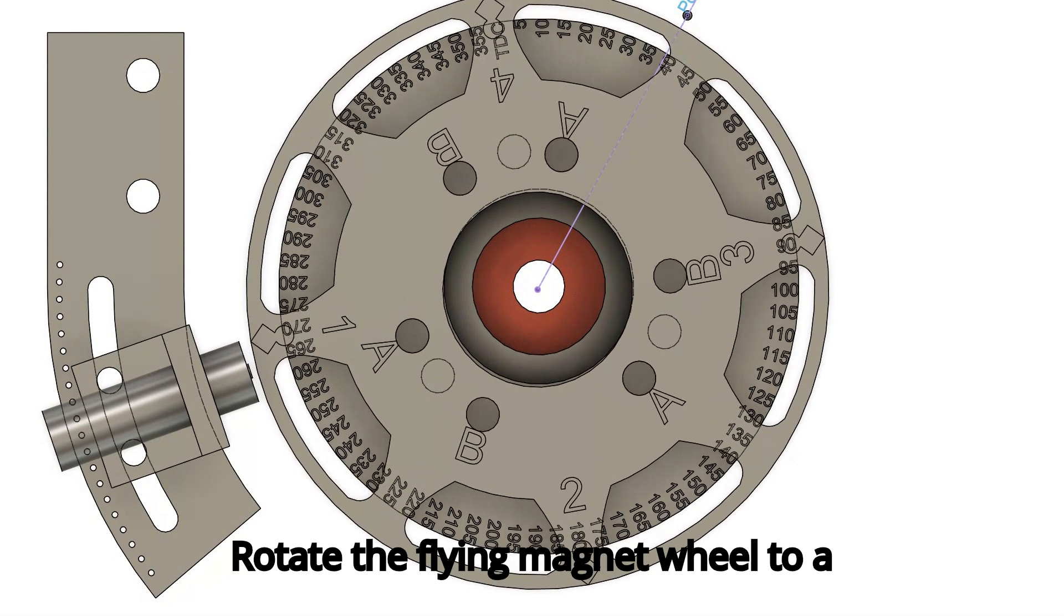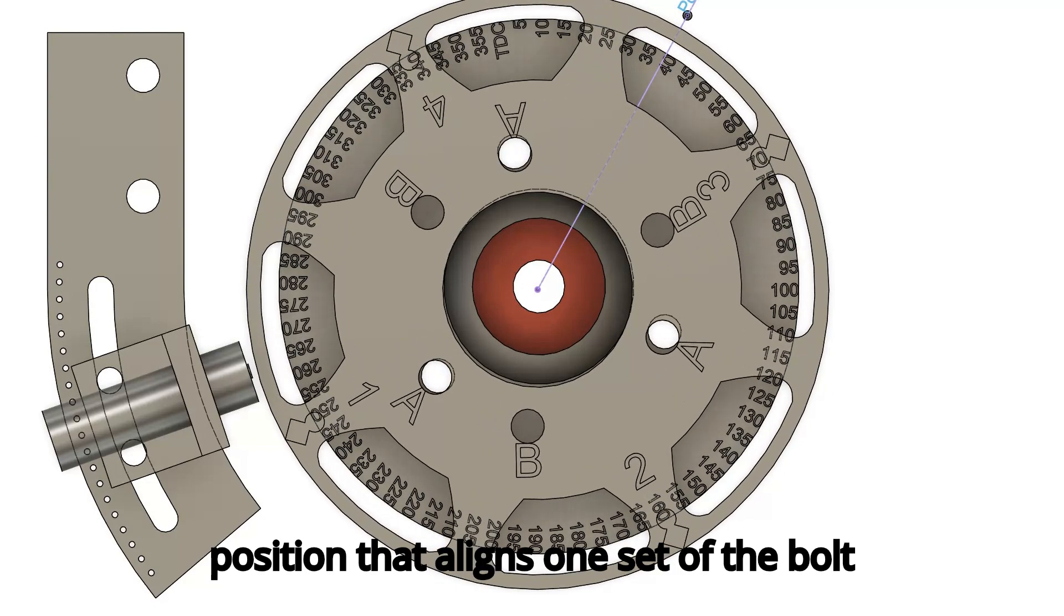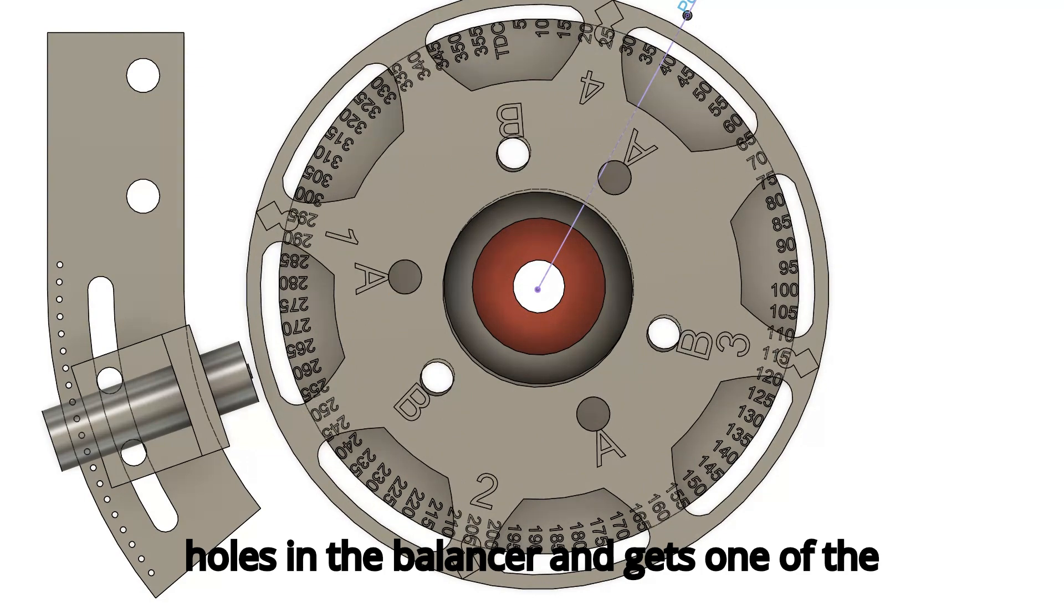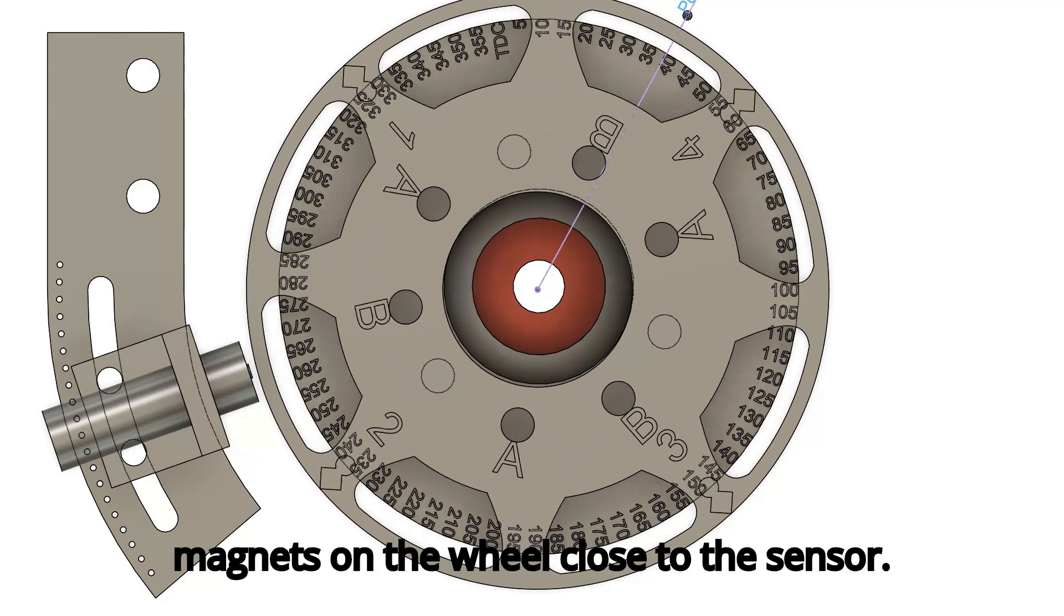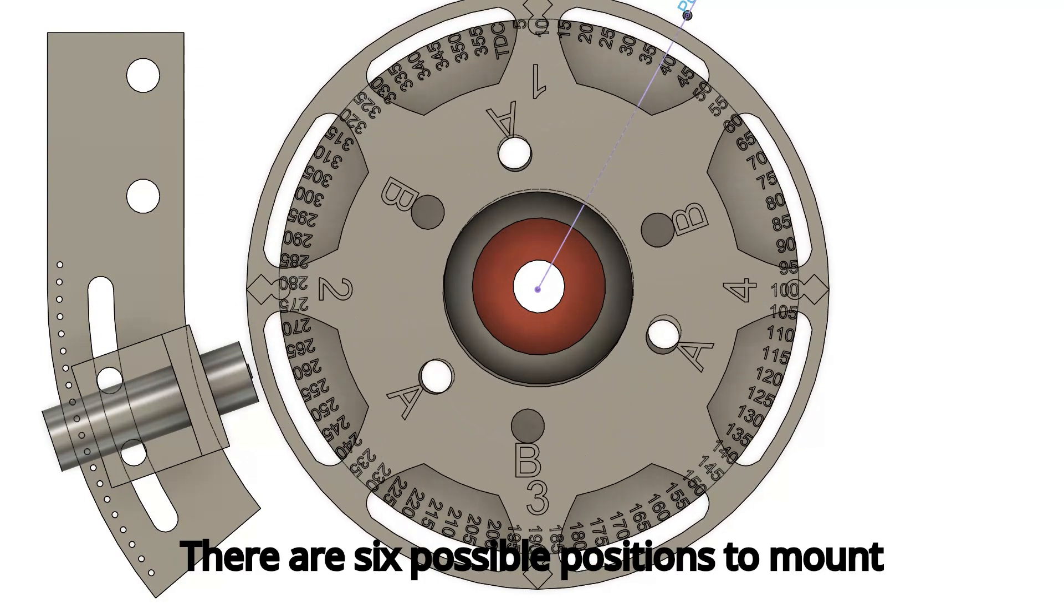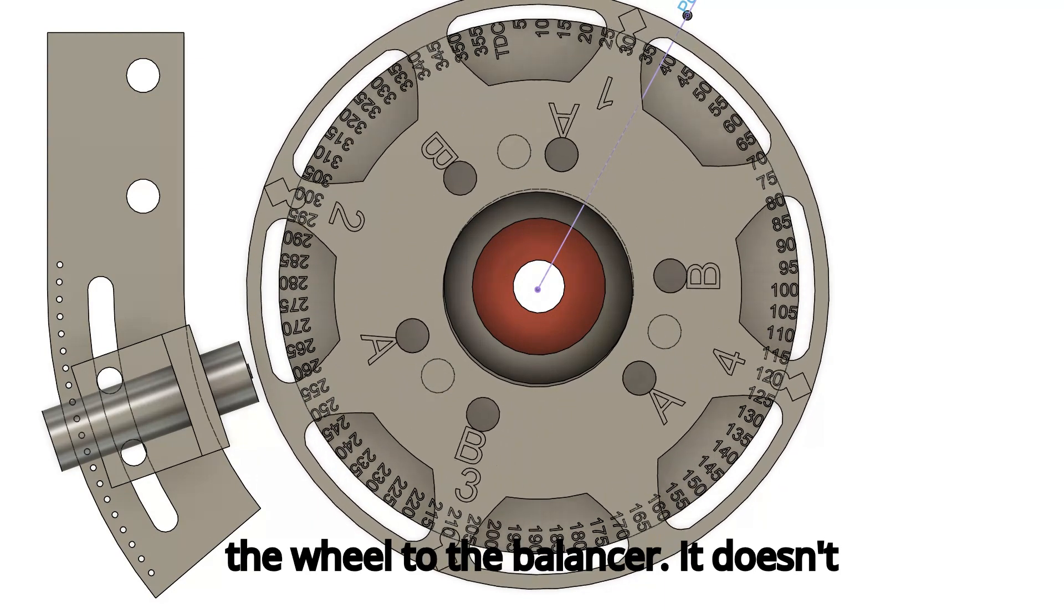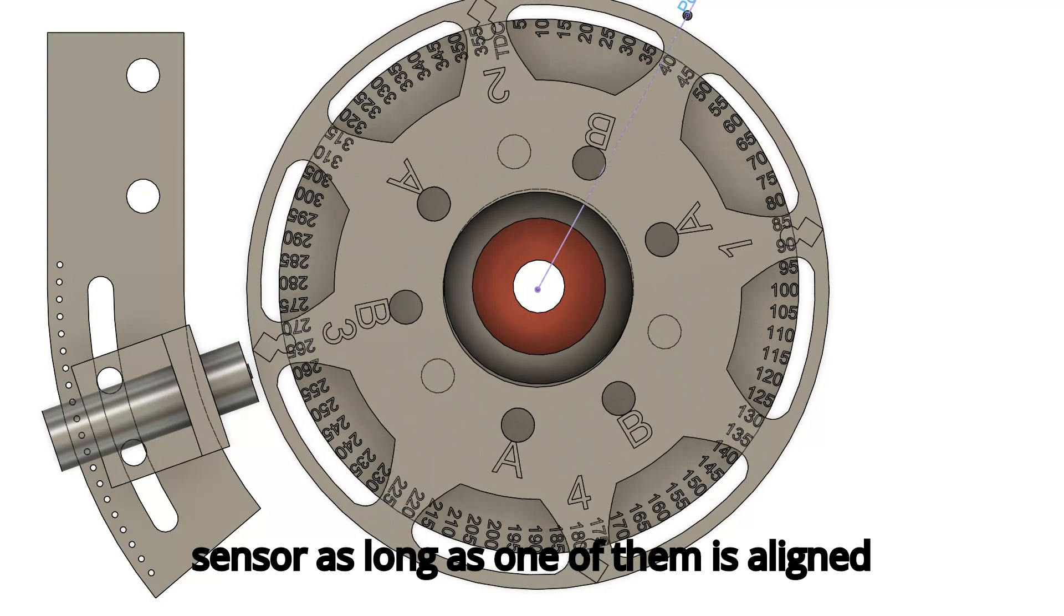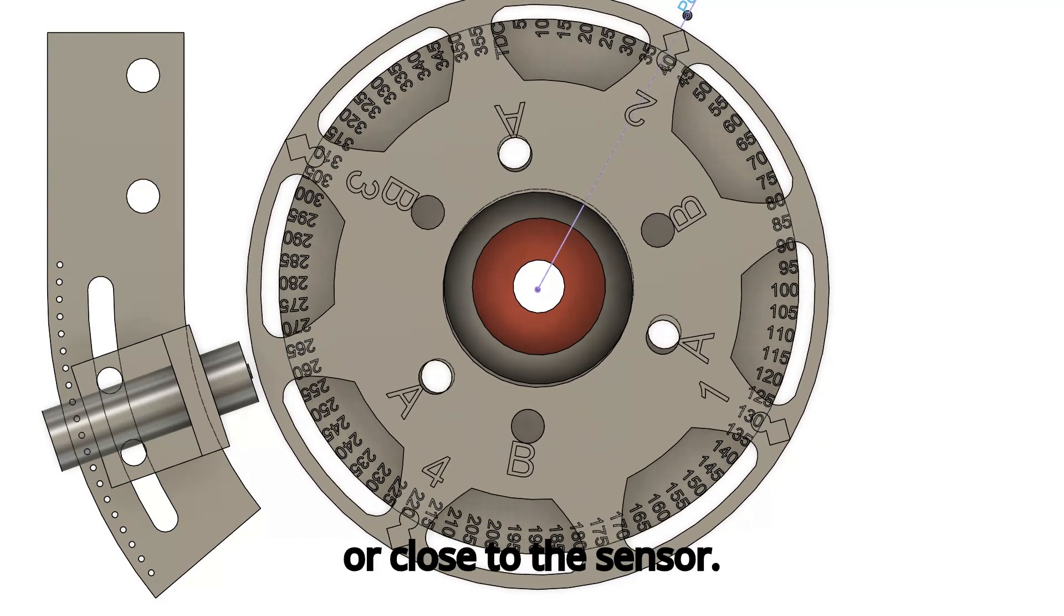Rotate the flying magnet wheel to a position that aligns one set of the bolt holes on the wheel with the three bolt holes in the balancer and gets one of the magnets on the wheel close to the sensor. There are six possible positions to mount the wheel to the balancer. It doesn't matter which magnet is aligned with the sensor as long as one of them is aligned or close to the sensor.